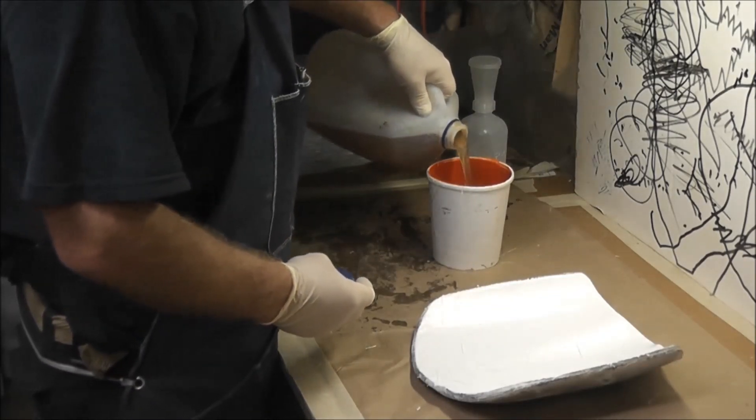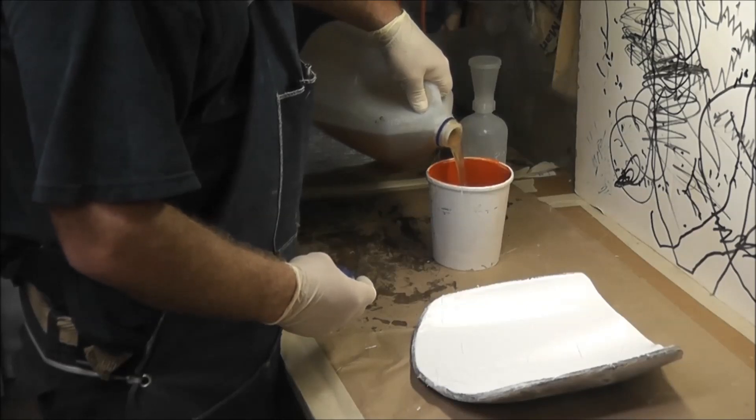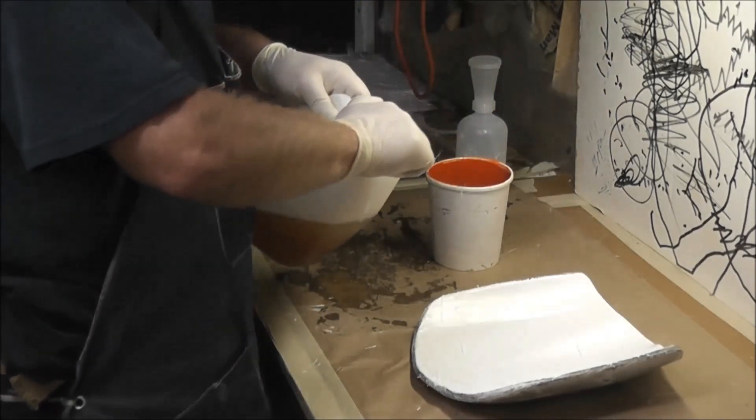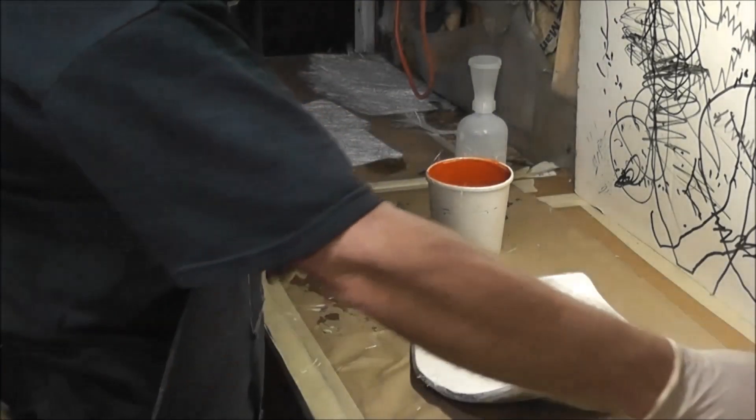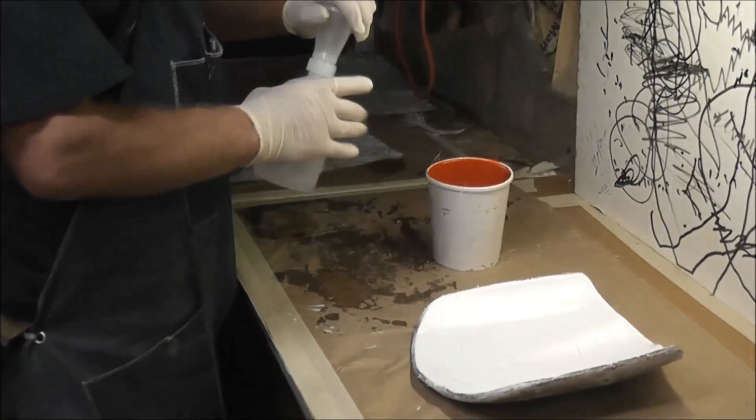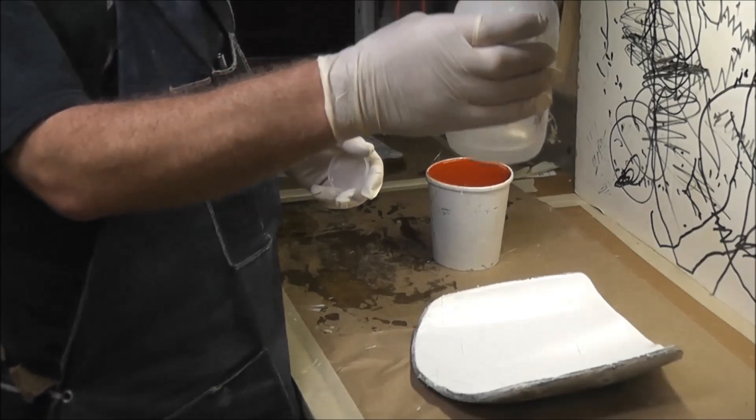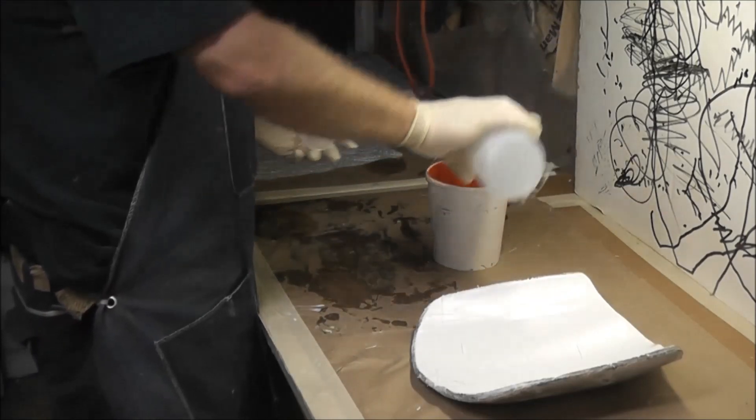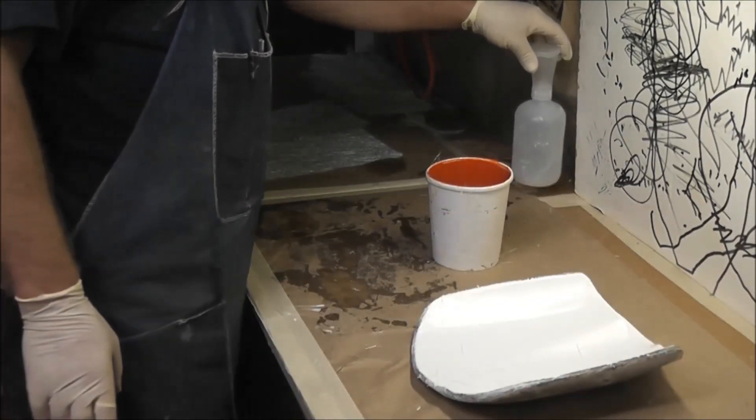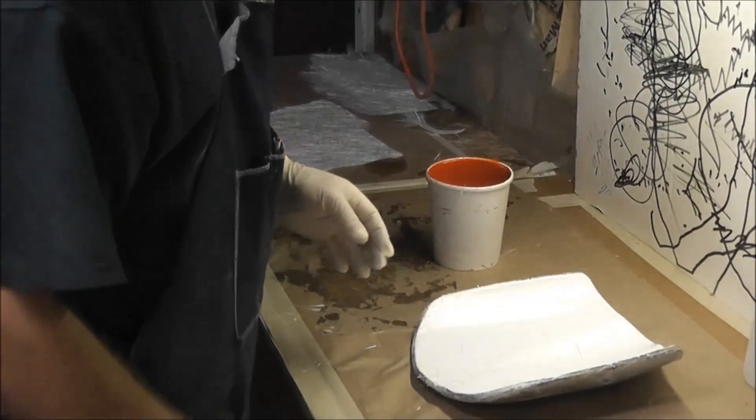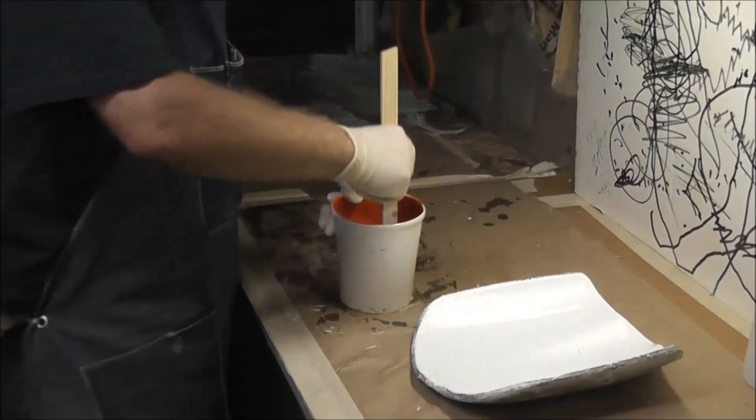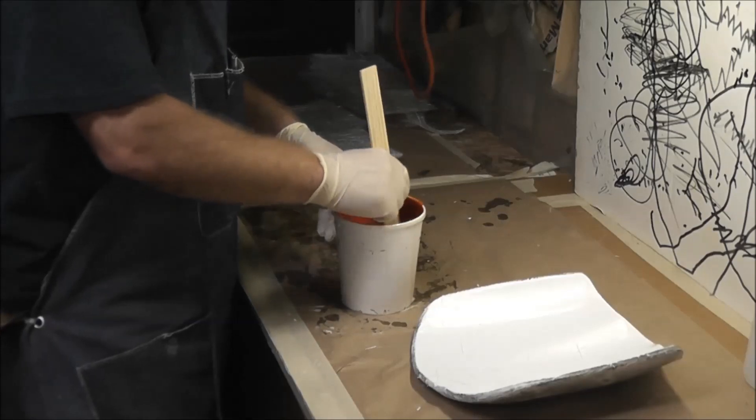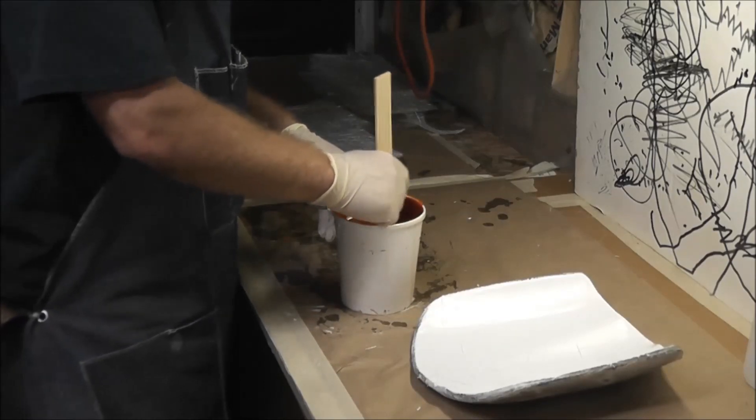First I'll tell you we're going to mix up our resin and hardener. This is one percent, so if you have a hundred grams you want one gram of hardener, MEKP. I've done enough, I can pretty much do it by looking at it. You can go up to two percent, but usually that's just for molds and you need to be careful of the temperature when you do that. Really don't want to go higher than that on the hardener, which is MEKP, methyl ethyl ketone peroxide.